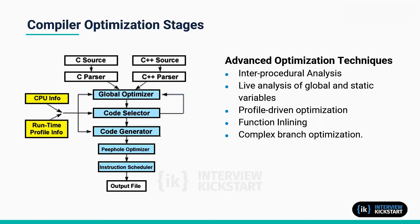That is where all the optimization stages are. The compiler back-end is divided into five stages, as shown in this figure. Optimization in fact occurs at each stage, although global optimization is the most important. The global optimizer performs both high-level program analysis and a wide range of general optimizations.